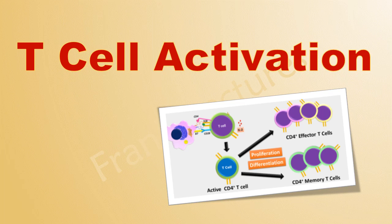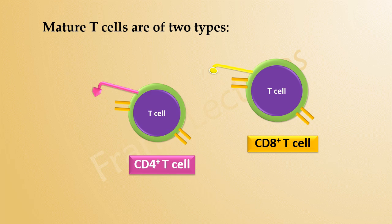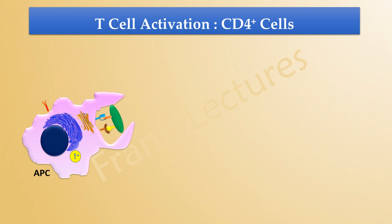T-cell activation is a complicated process; we will keep it simple by discussing the main steps only. Mature T-cells are of two types: CD4-positive T-cells and CD8-positive T-cells. These are naive T-cells since they have not encountered any antigen yet. First, we will study the activation of naive CD4-positive T-cells.